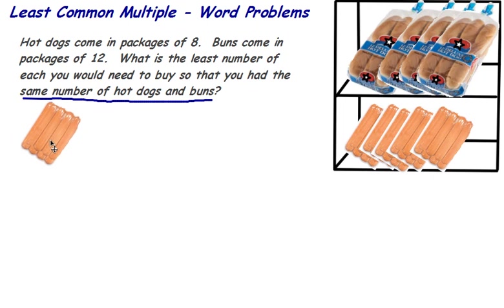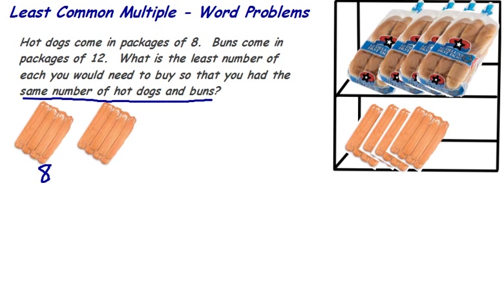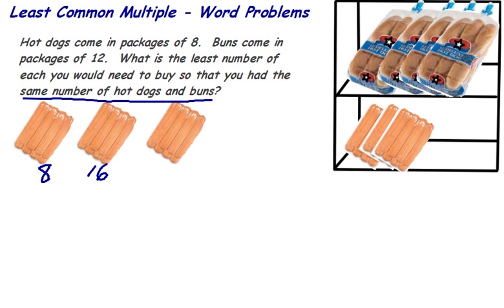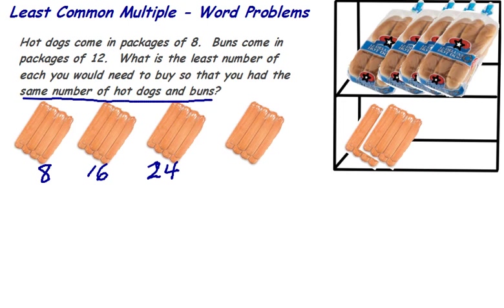So let's think about it. Hot dogs come in packages of 8. If I buy 1 pack of hot dogs, I have 8 hot dogs. If I buy 2 packs of hot dogs, I have 16. If I buy 3 packs of hot dogs, I have 24. If I buy 4 packs of hot dogs, I have 32. So I can't really buy 10 or 20 hot dogs, right?